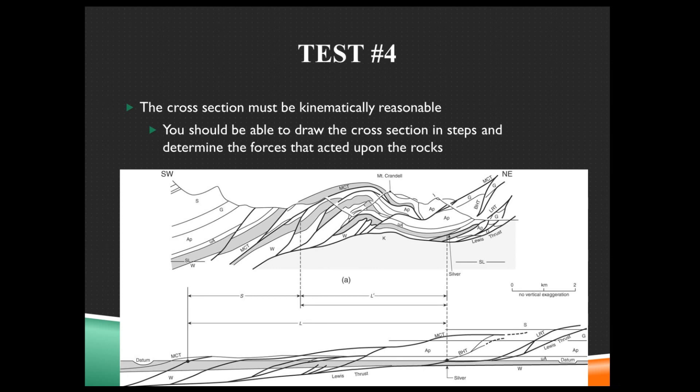Or do you have to explain it with like, oh, there was compression, and then there was tension, and then there was compression, and then there was uplift, some complicated, convoluted explanation just to make your cross section happen? Or does it make sense that, hey, we know from other studies nearby, there was compression for 30 million years in this area, so my cross section has to form by just continual compression. Yes, it works. No, it doesn't work. I can't explain it. I can explain it. Does it work kinematically? Exactly. Is it reasonable?